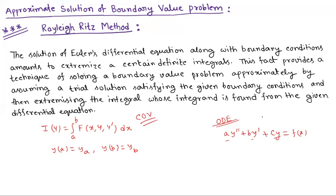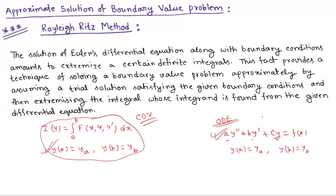The question is: can we solve that boundary value problem of ordinary differential equations using the concept of calculus of variation? Suppose we have a boundary value problem like A·y'' + B·y' + C·y = f(x), where A, B, C are maybe some constants, maybe some functions of x, with boundary conditions y(A) = y_A and y(B) = y_B. The Rayleigh-Ritz method is a bridge between the problem of ordinary differential equations and calculus of variation.